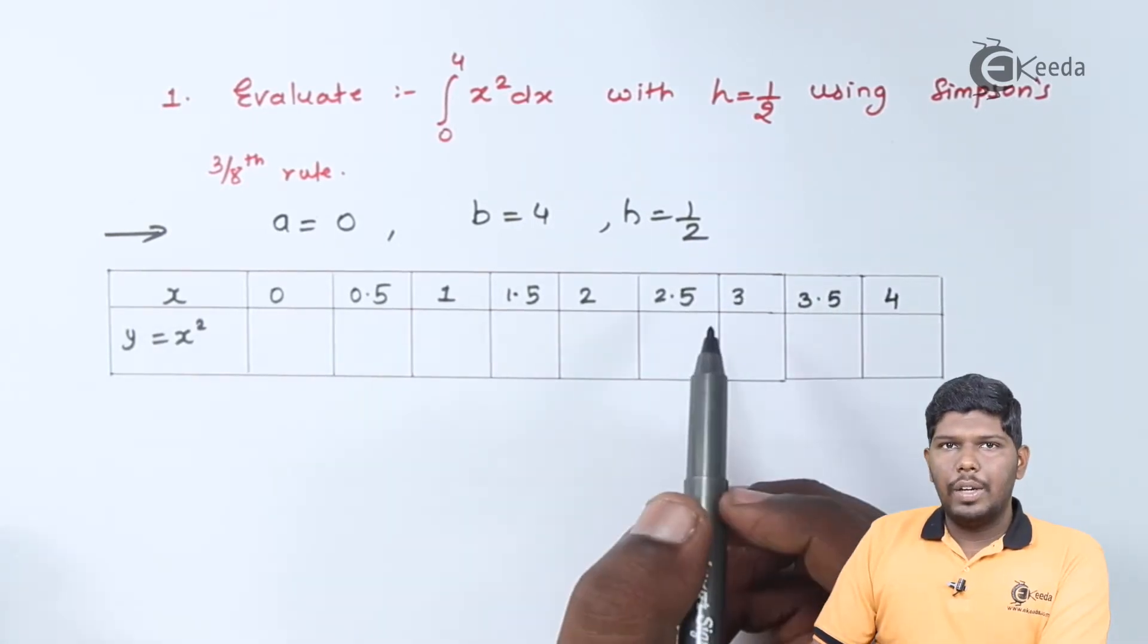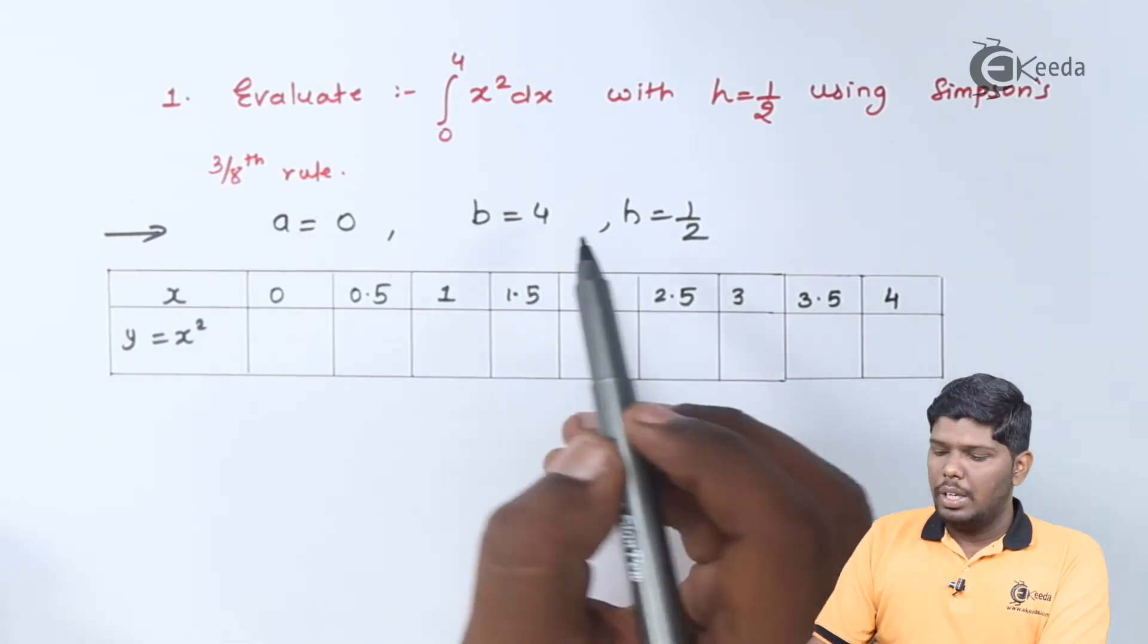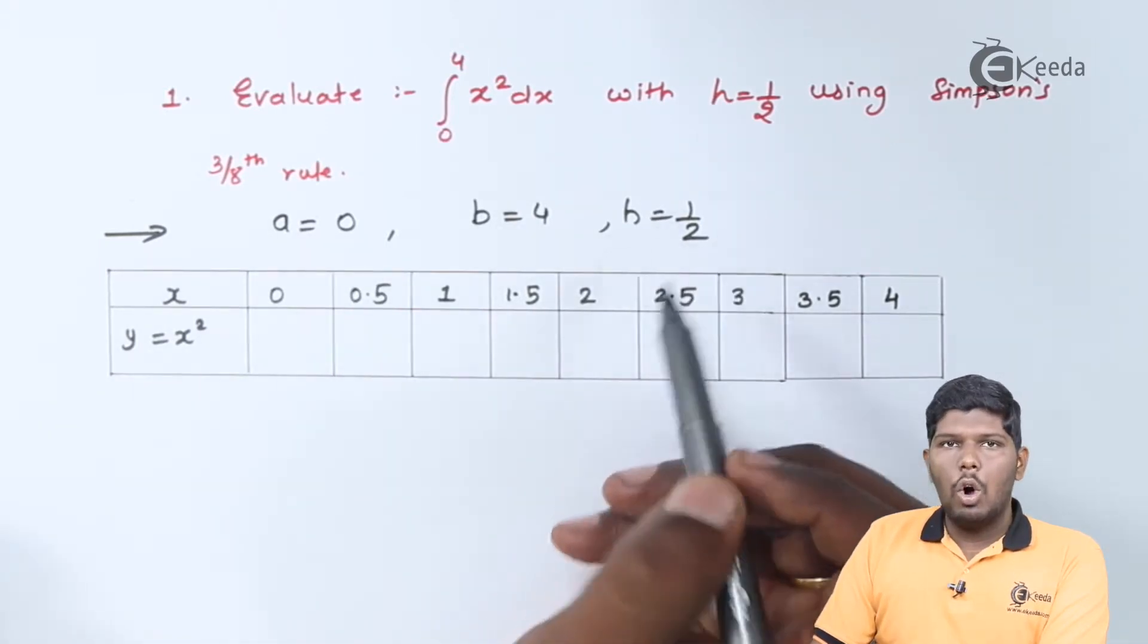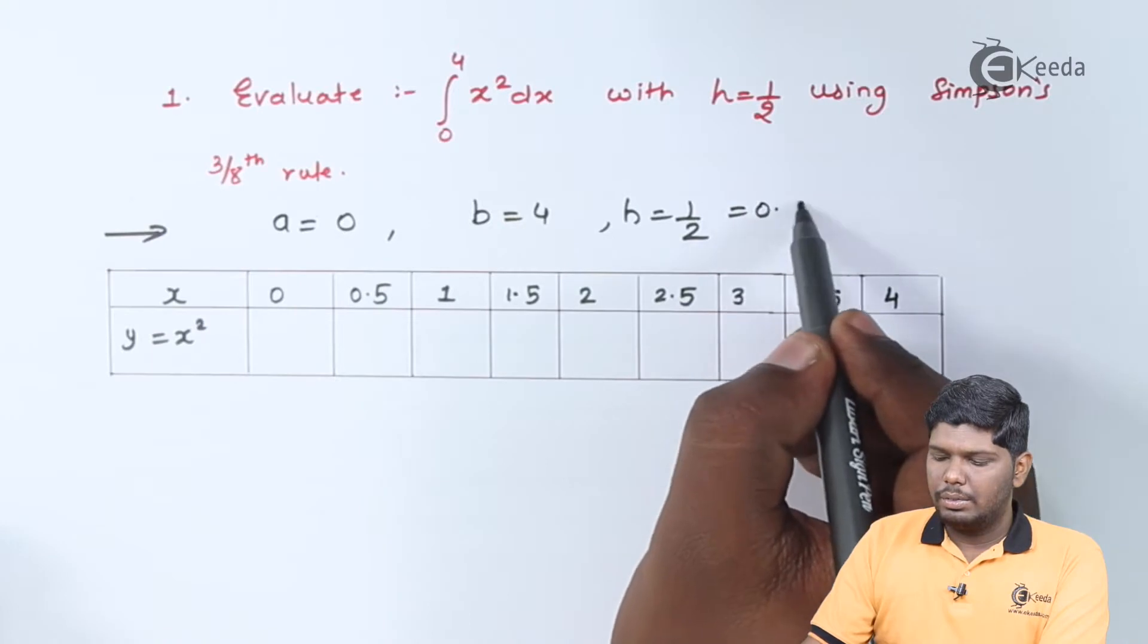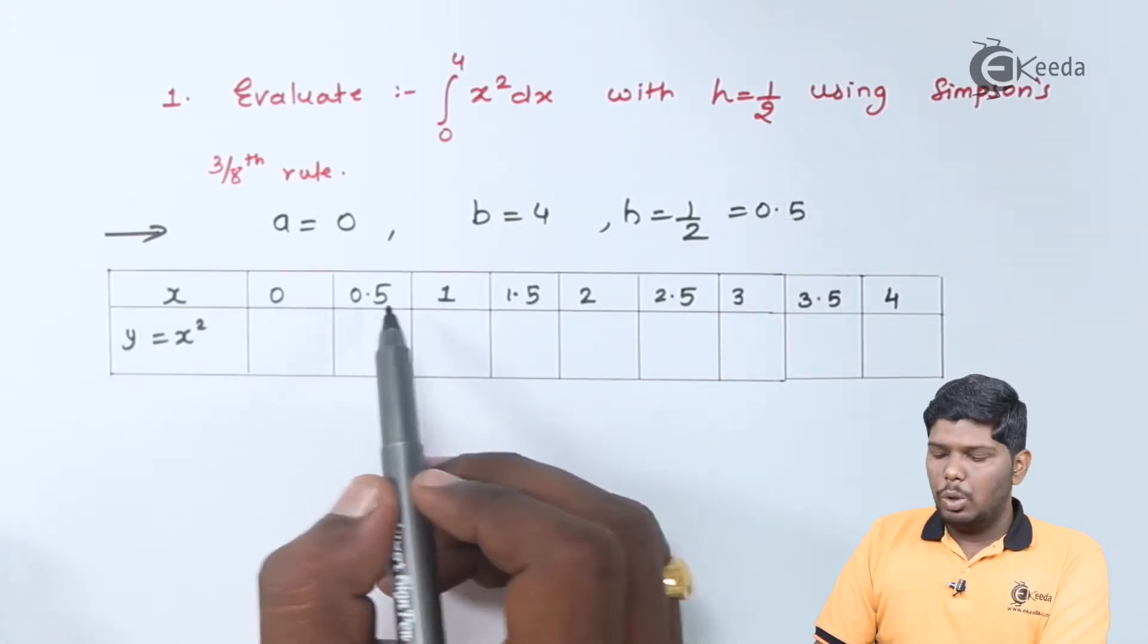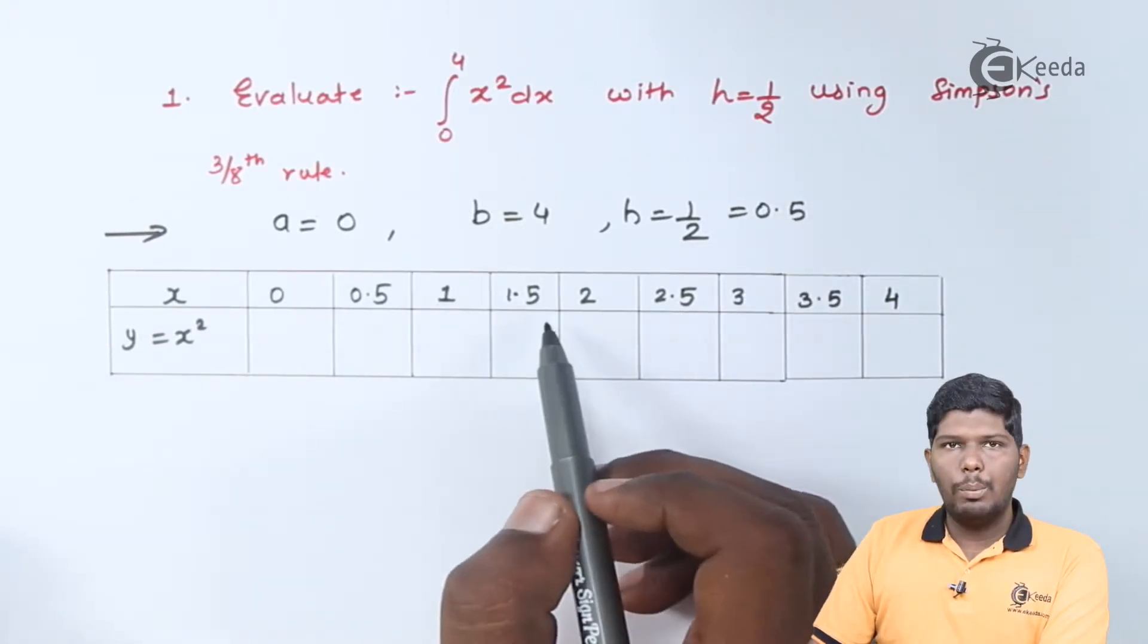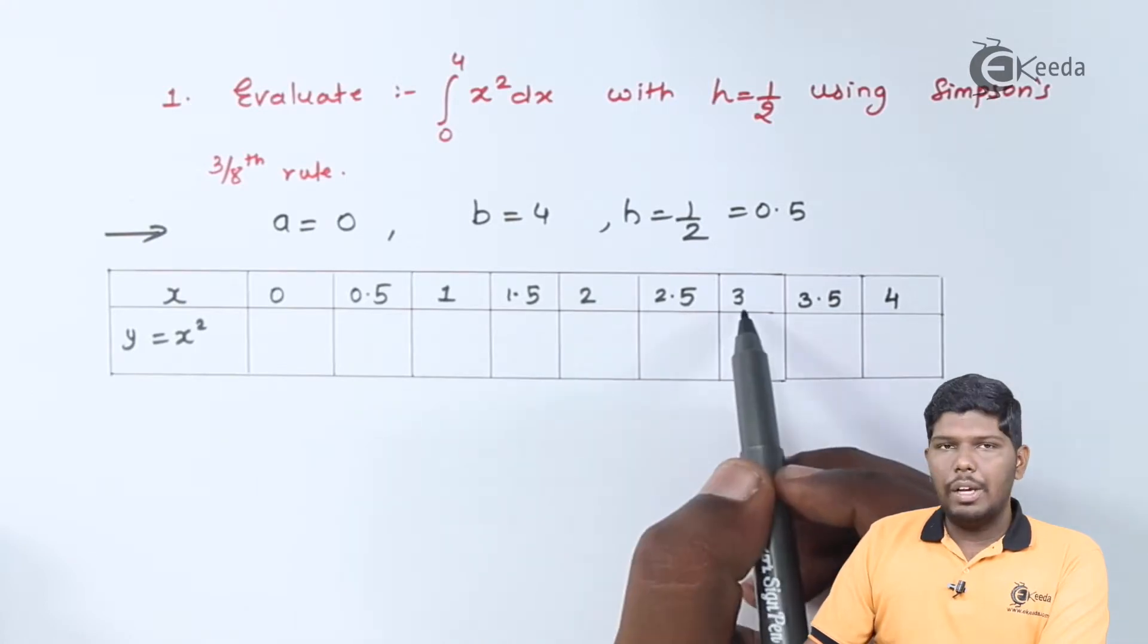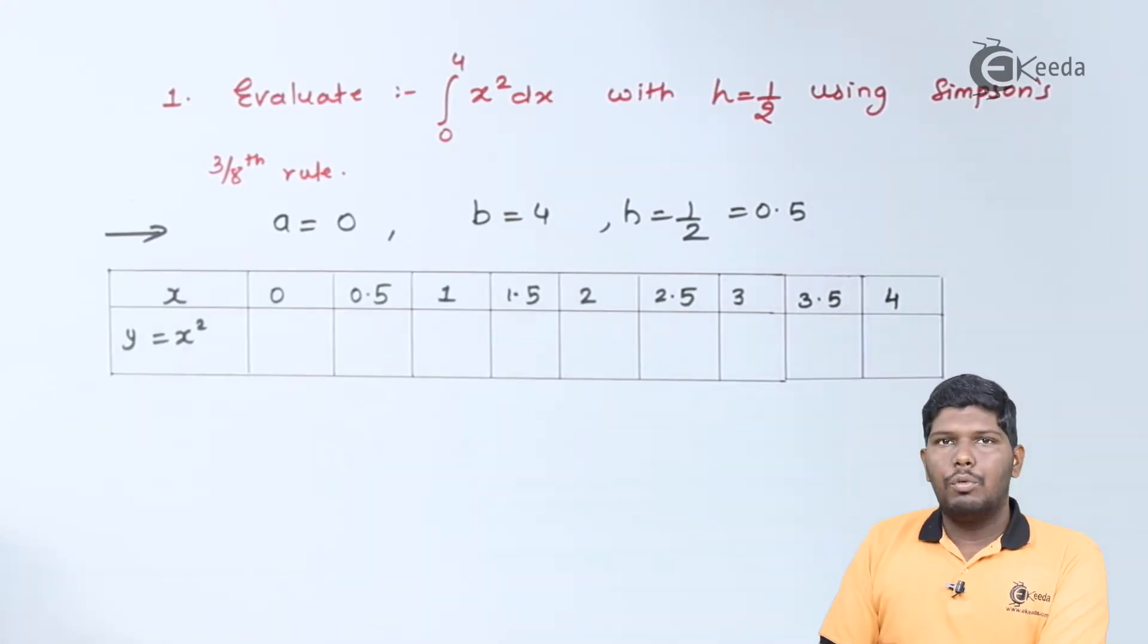Thus, we have substituted the values of x which are starting from 0 and increasing it by 1 by 2 or 0.5. So that will give you 0, 0.5, 1, 1.5, 2, 2.5, 3, 3.5 up to 4.